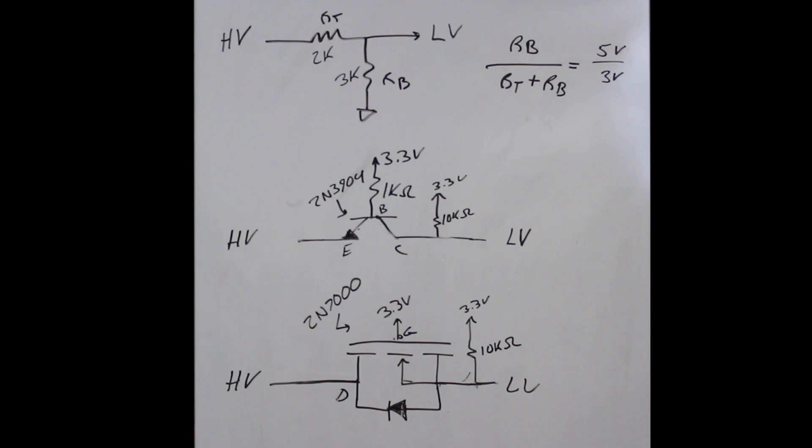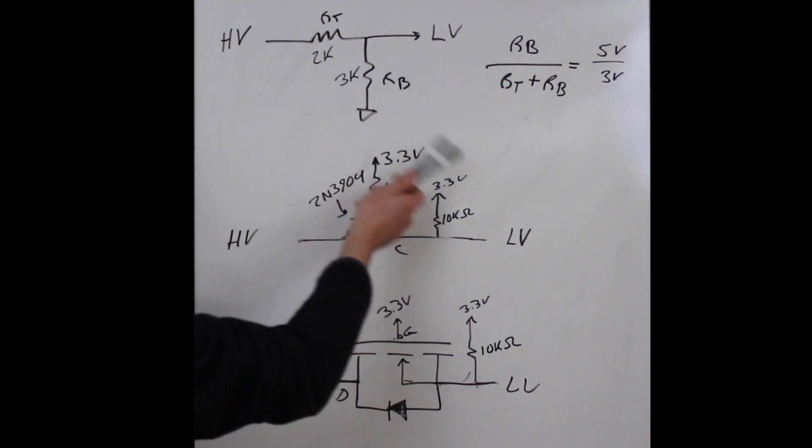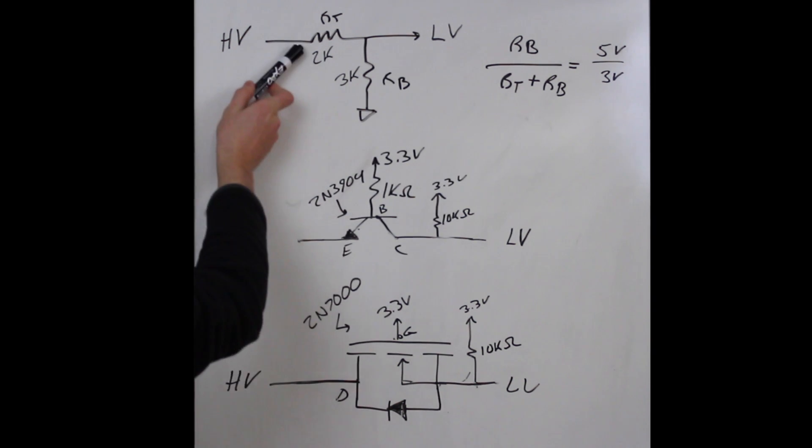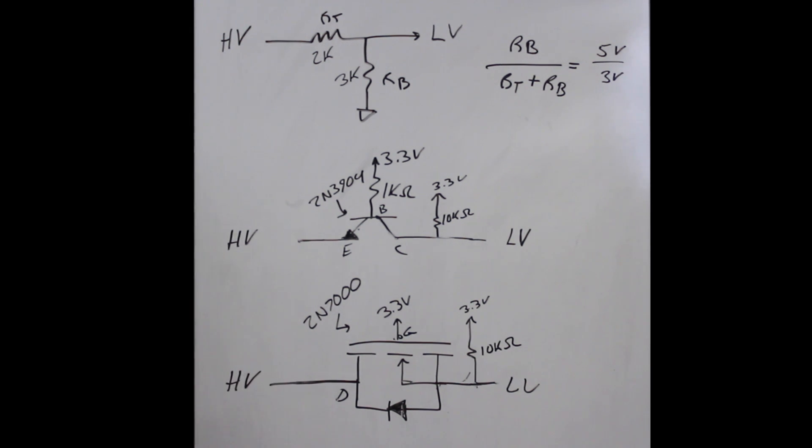Here's three methods. The first one is a simple voltage divider. You put your 5 volts in, you get your 3.3 volts out. To keep the math simple, I'm just dividing down to 3 volts with a 2k and a 3k resistor.